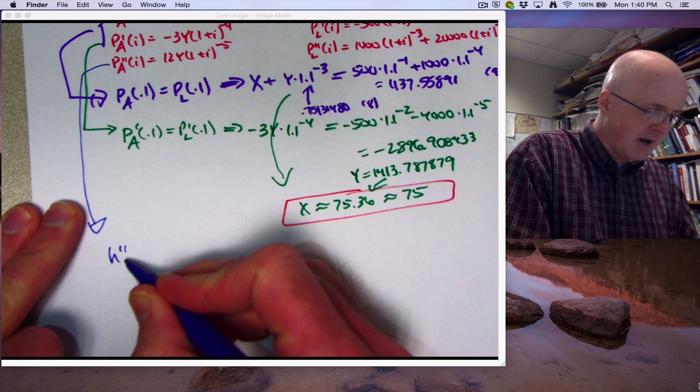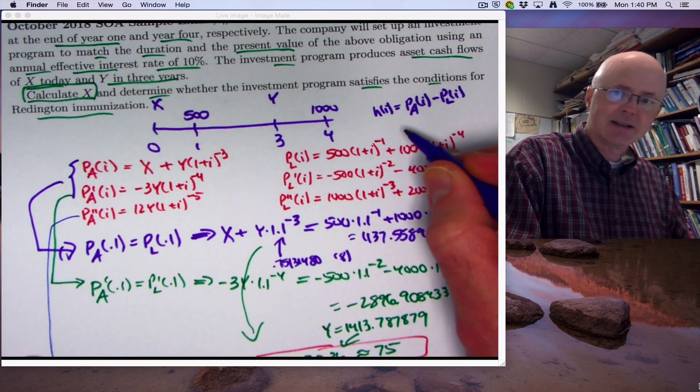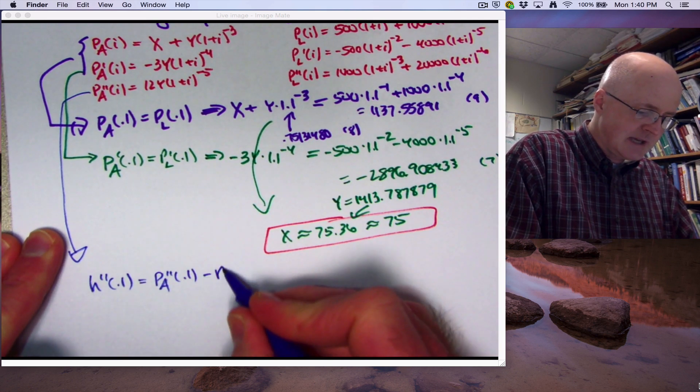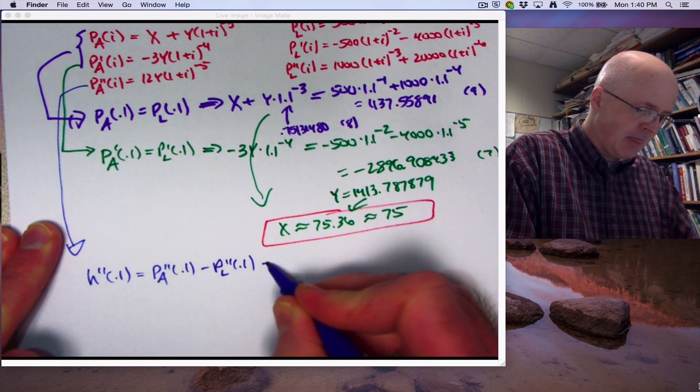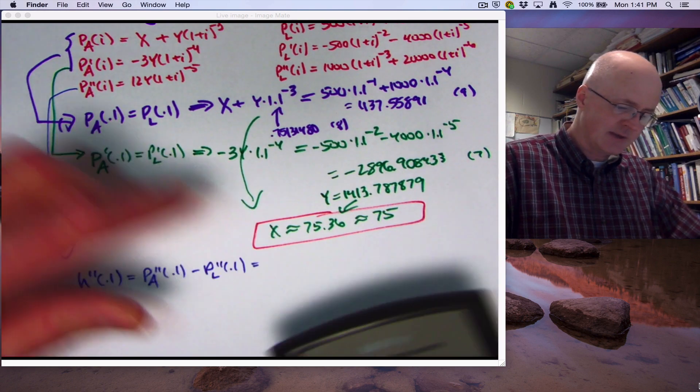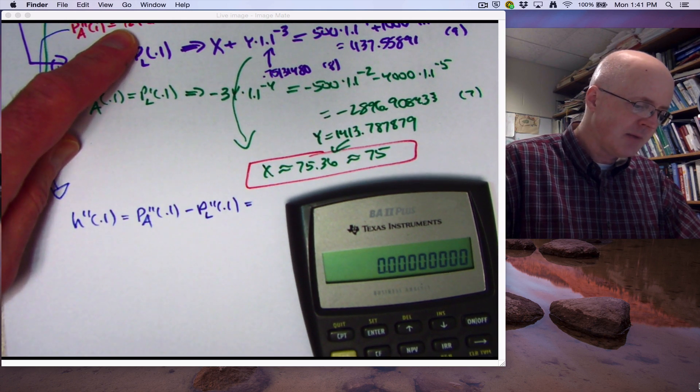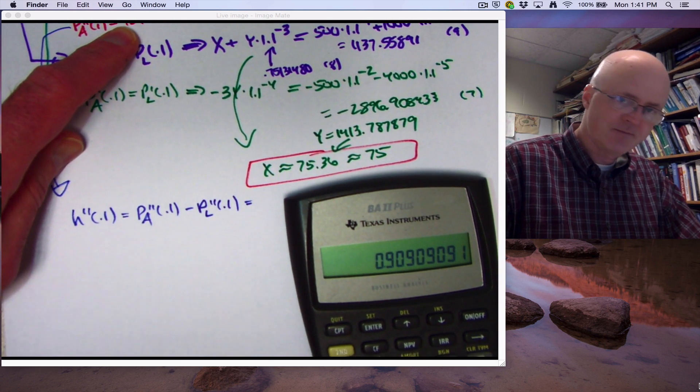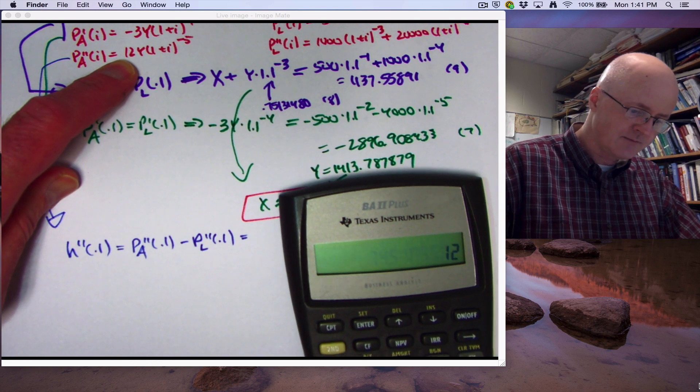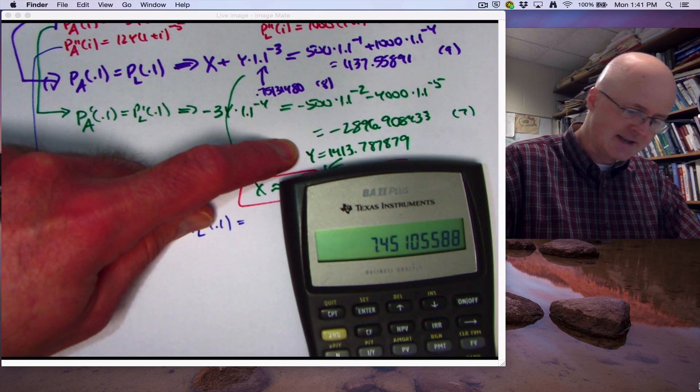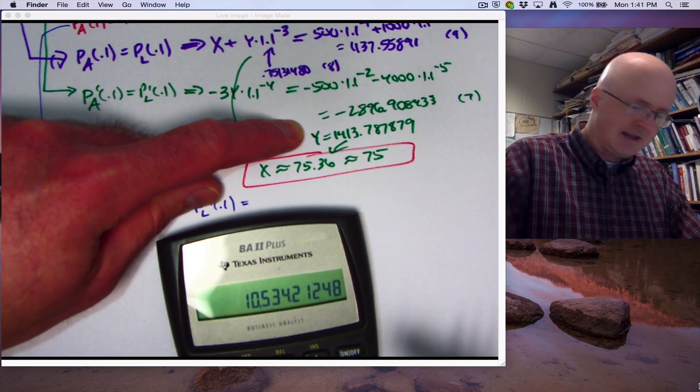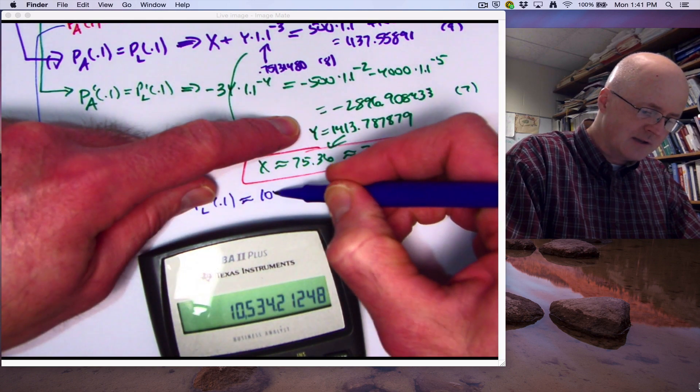So let's look at these second derivative. In fact, let me go ahead and think about it as h double prime of 0.1, where h of i, again, is this difference here. It's going to be Pa double prime of 0.1 minus Pl double prime of 0.1. So that's going to be, let's go ahead and just calculate this with the calculator. Here's Pa double prime, plug in i equals 0.1 there. So I get v to the fifth power is this, times 12 times the value y, which I guess I did not store, times 1413.787879. I get about, let me just use an approximation here, 10,534.